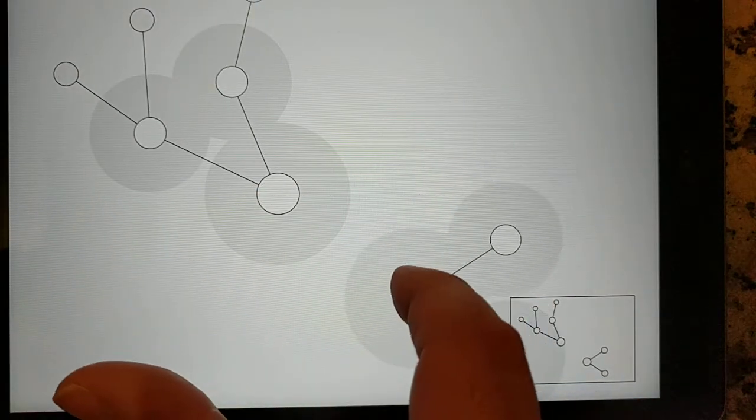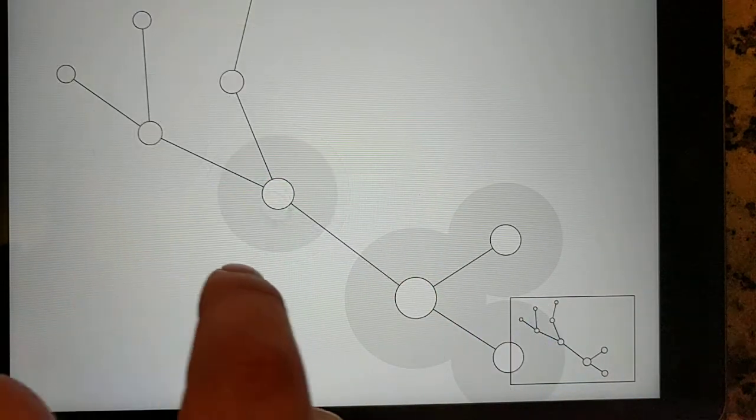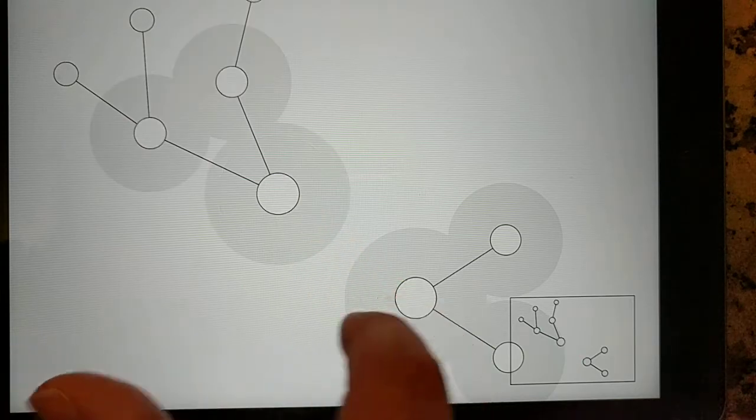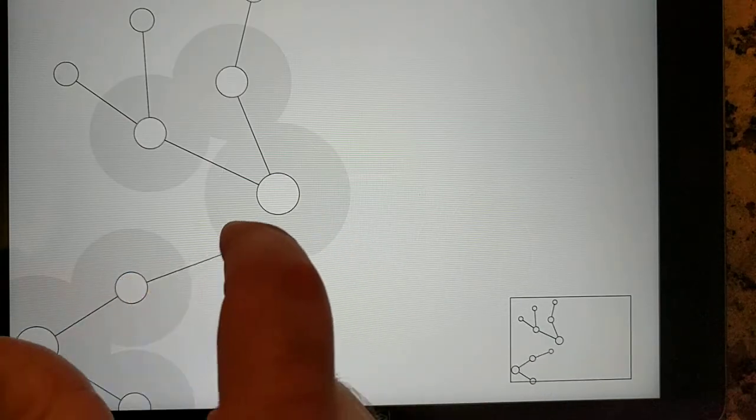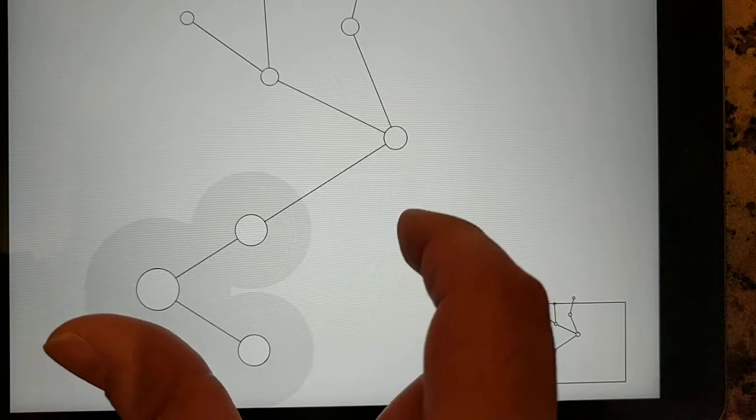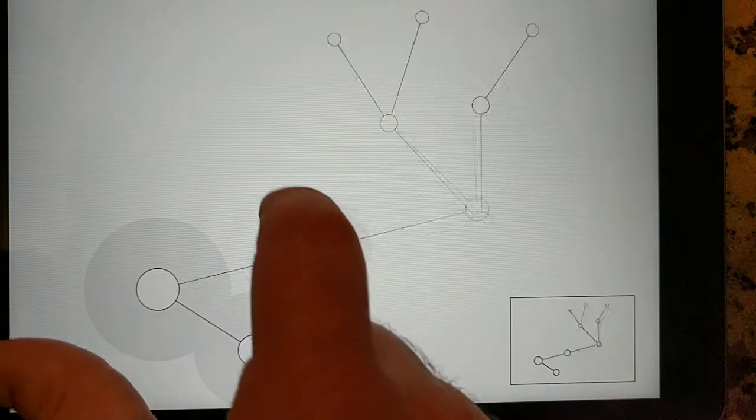We can reattach it to this tree by dragging a new node over there which connects them, or we could reattach it to one of these children and force it further down into the hierarchy, and now this all moves together.